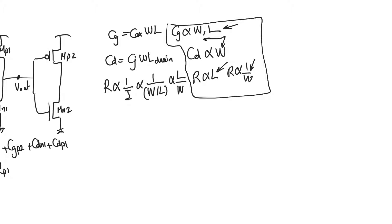When everything is proportional to L, L should be kept as small as possible — equal to the technology parameter L_minimum, which is the smallest channel length that can be fabricated in the current technology. For example, in a 33 nanometer technology, L_minimum is 33 nm. So for all transistors, L equals L_minimum. This is a fundamental result.